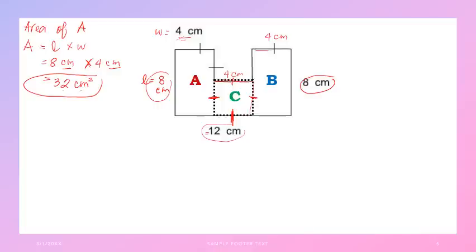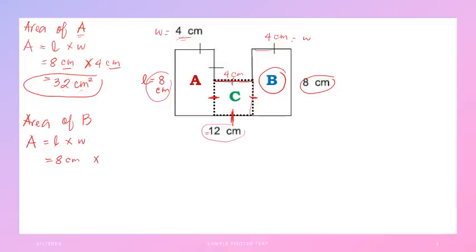Now let's move to the area of rectangle B. Area of B equals length times width. Since A and B are the same size, the length is also 8 cm and the width is 4 cm. So, 8 times 4 equals 32. Copy the unit — we multiplied two cm values, so 1 plus 1 equals 2, giving us cm squared. The area of rectangle B is 32 cm squared.